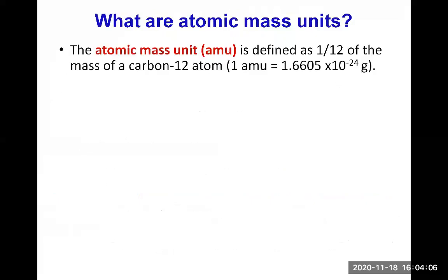So what are atomic mass units? That's a unit with symbol AMU, defined as one twelfth of the mass of a carbon-12 atom. That equals 1.6605 × 10⁻²⁴ grams — a very, very small mass, since it's one twelfth of the mass of one carbon-12 atom.